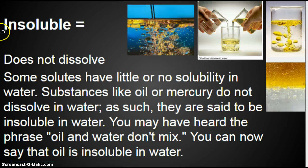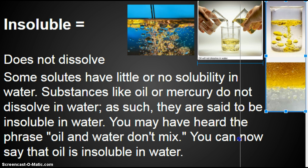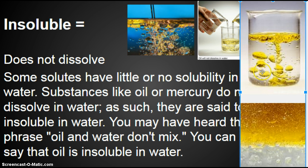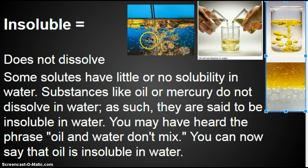We also have the word insoluble. Insoluble means it does not dissolve. Some solutes have little or no solubility in water. Substances like oil or mercury do not dissolve in water — they are said to be insoluble in water. You may have heard the phrase 'oil and water don't mix.' You can now say that oil is insoluble in water. When you pour them together, the oil separates out and forms spheres — little droplets — because that shape minimizes surface area, allowing the oil to avoid the water and float on top.